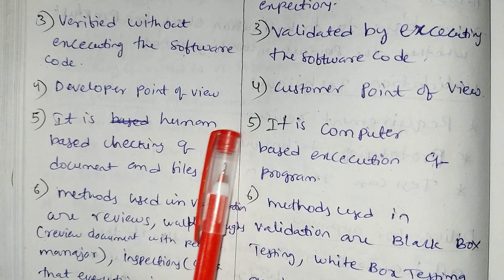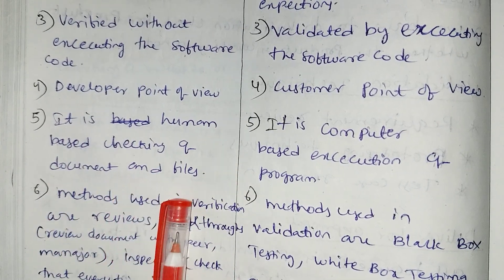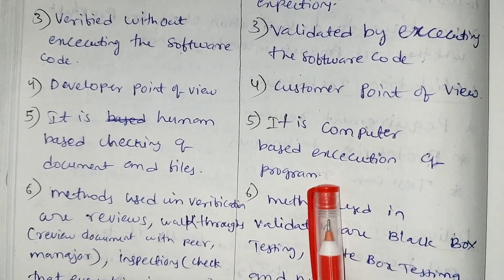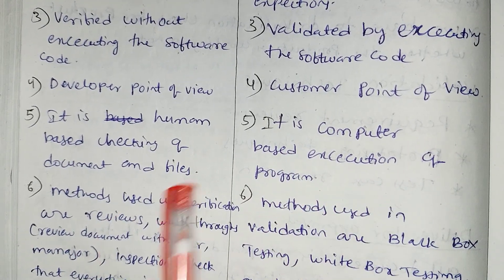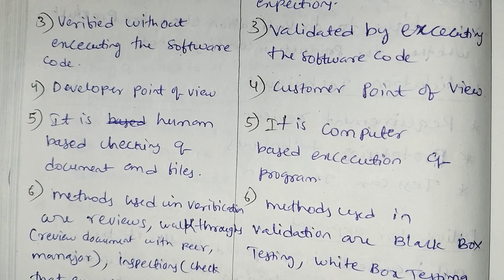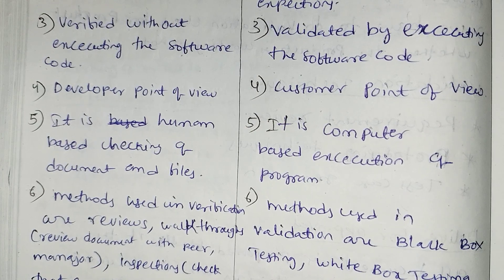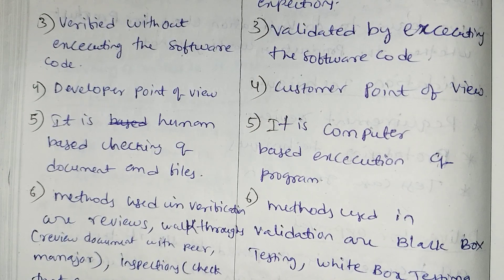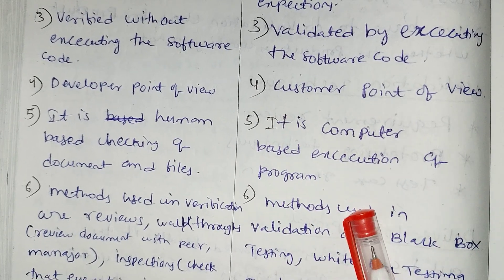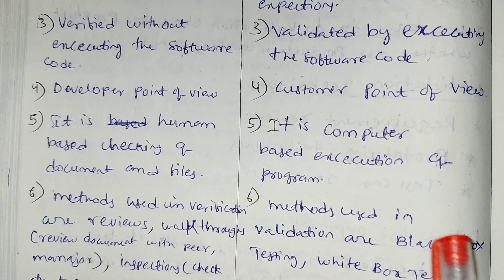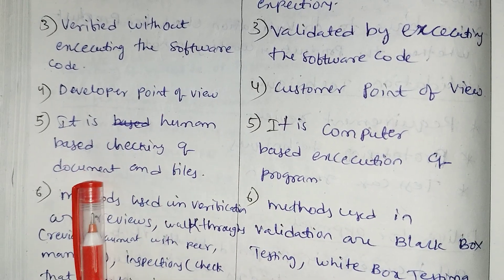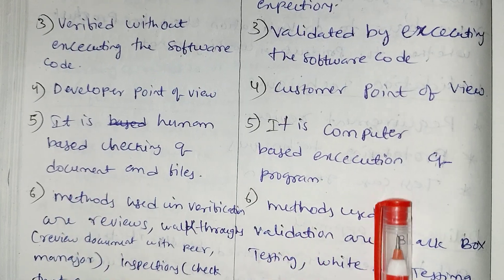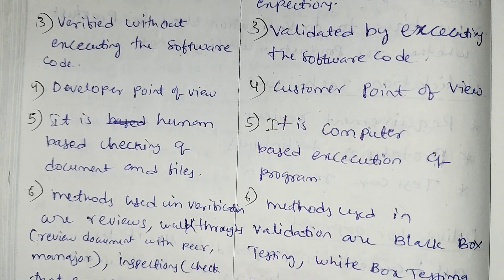Verification is a human-based checking of documents and files. Validation is the computer-based execution of the program. Human-based means checking documents and files; computer-based means executing and performing the program.